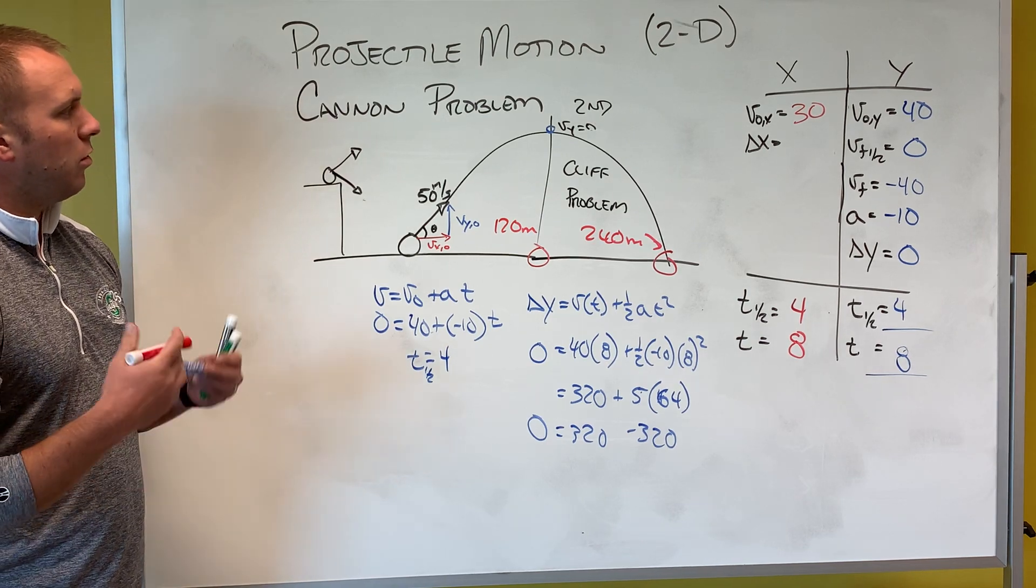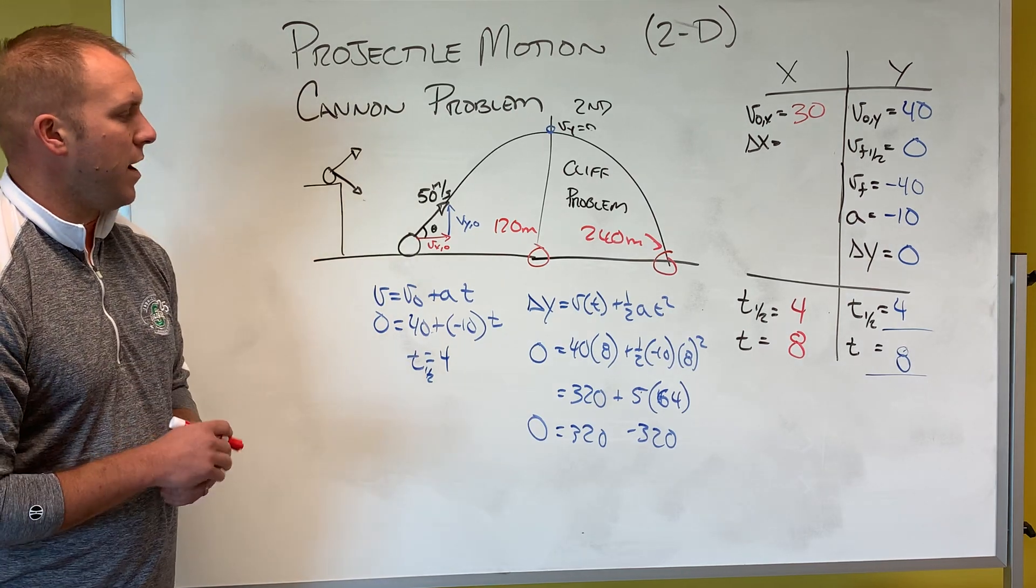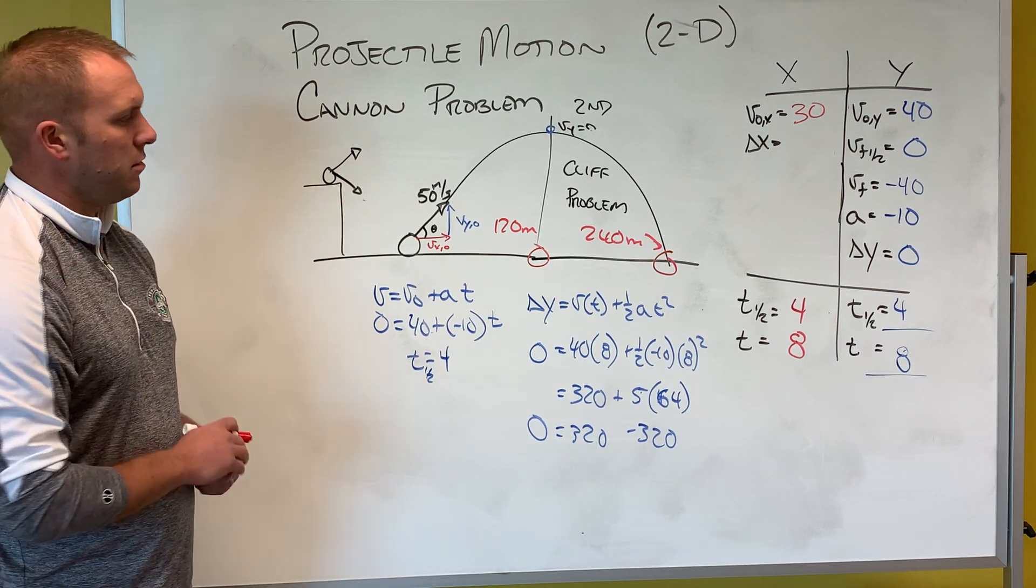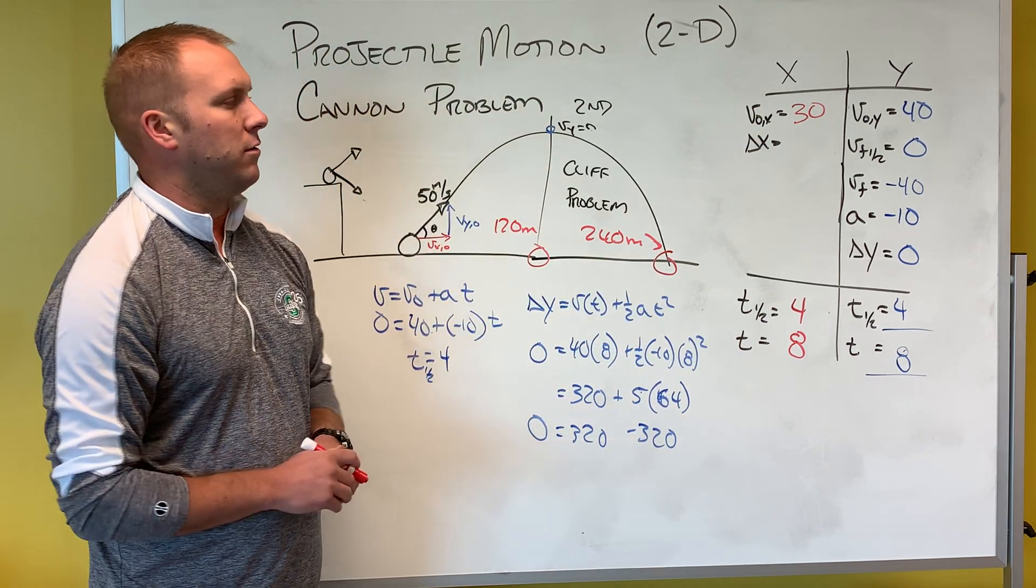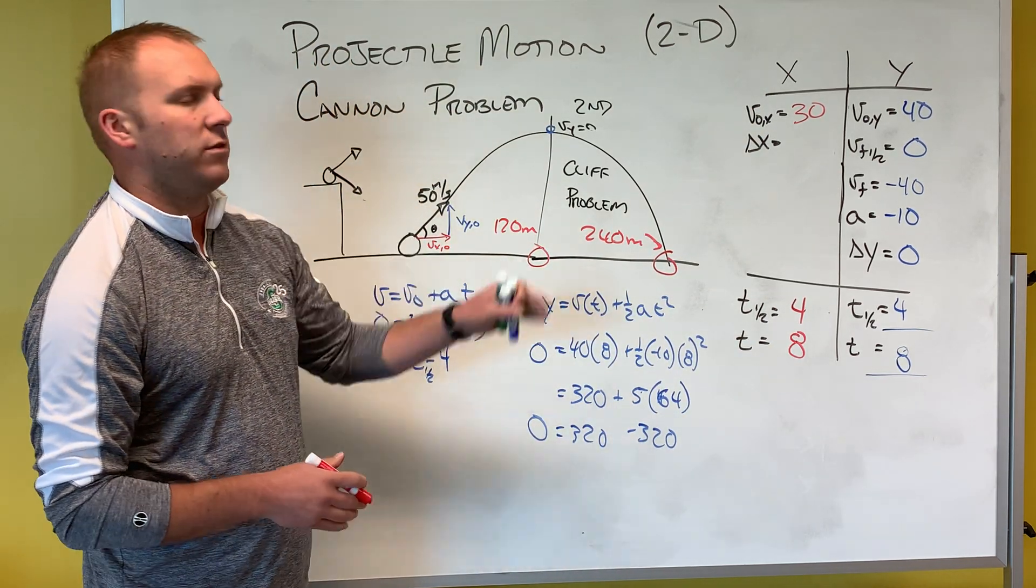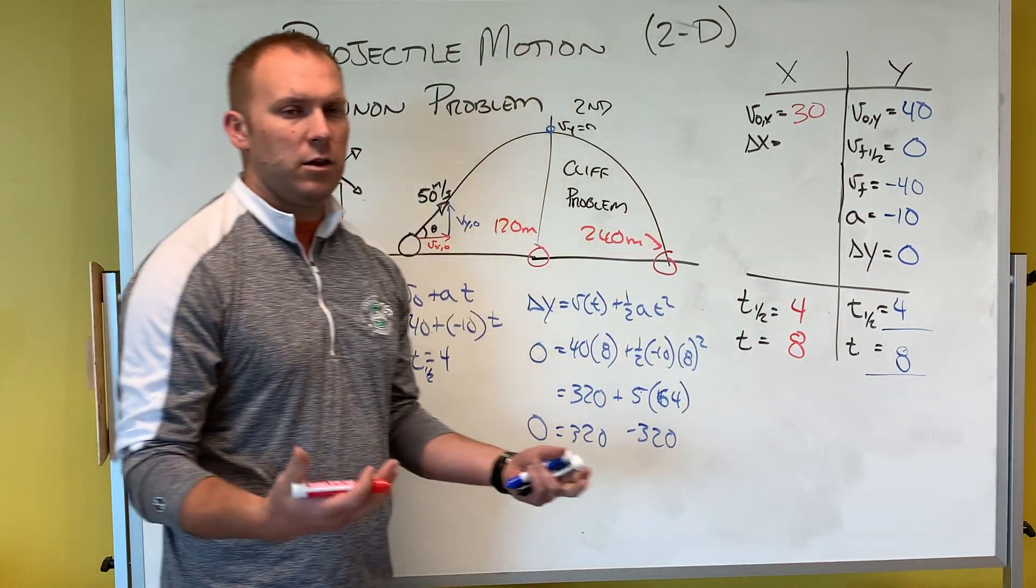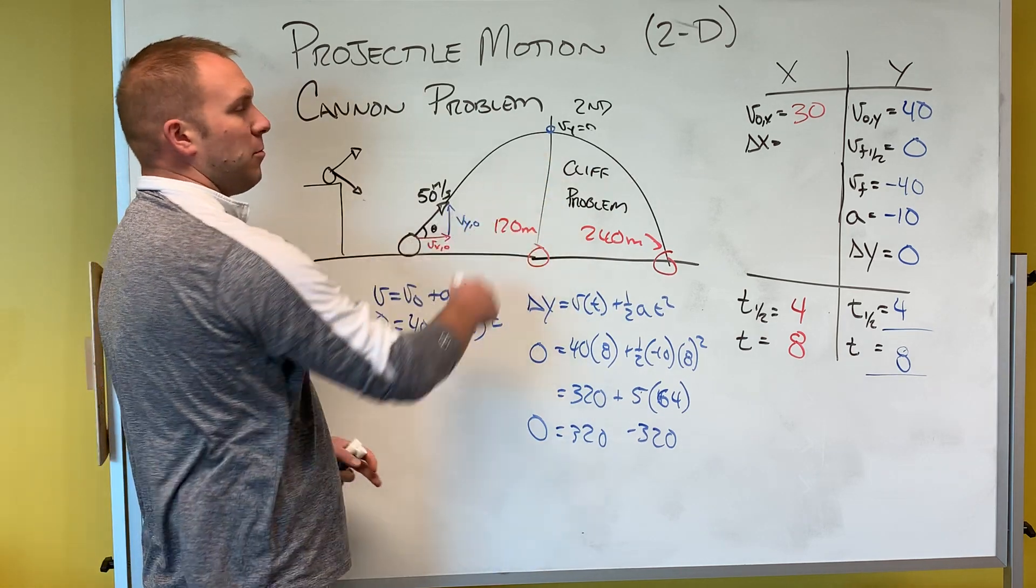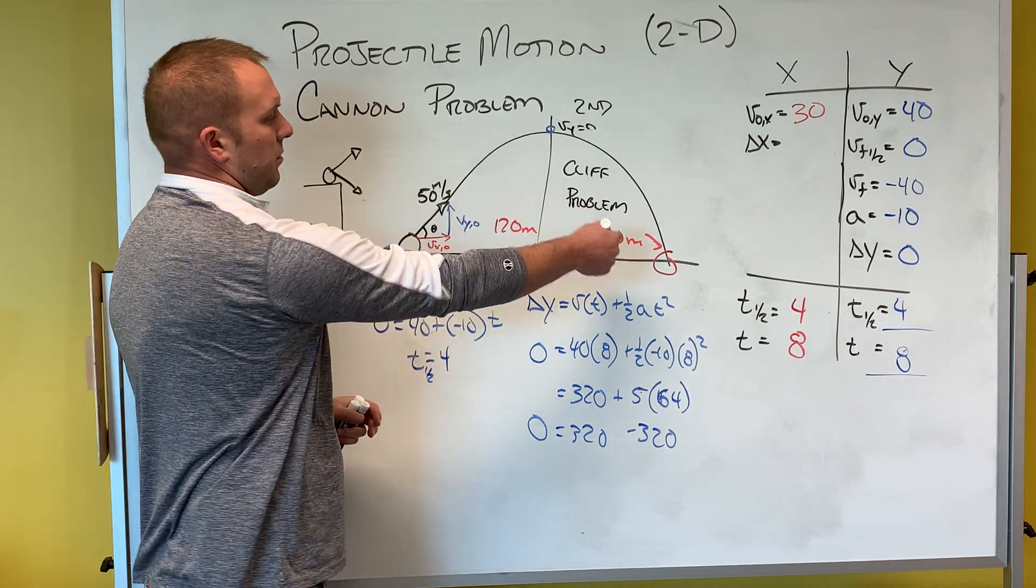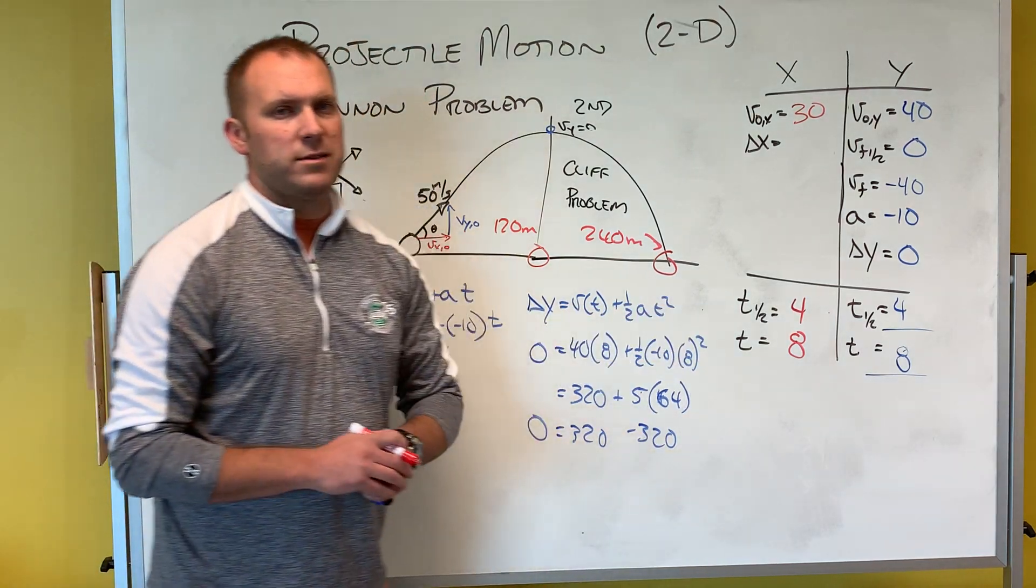So we're simply using our equations that we learned in one dimensional kinematics. We're applying them here, understanding that our x motion has to be at a constant velocity because there is no acceleration in the x direction, and my y motion is going to be accelerated. Understanding at a projectile, the top my y velocity is going to be zero. My time up is equal to my time down, and the thing that I can take back and forth is my time.